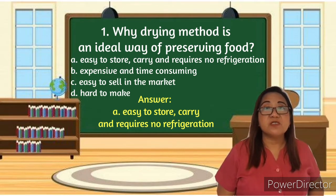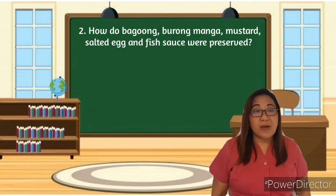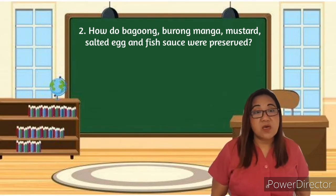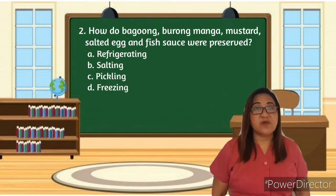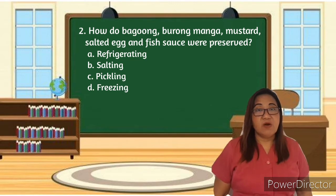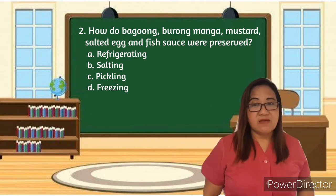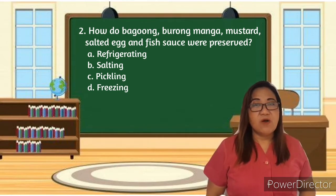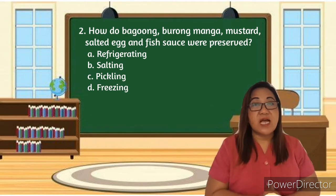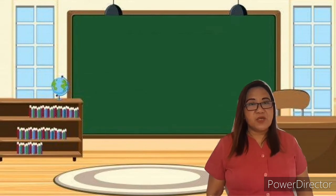For number two: How were bagoong, burong mangga, mustard, salted egg, and fish sauce preserved? A) Refrigerating. B) Salting. C) Pickling. D) Freezing. Raise your hand to answer. Laura, please answer. Very good! Your answer is correct — it's B, salting.